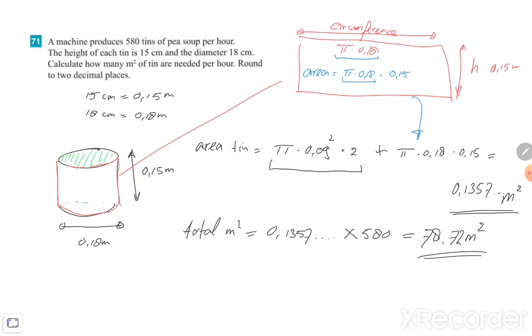So very important to calculate the area of one tin, and then you need to multiply with 580. You also can calculate, of course, with the square centimeters, but you need to convert it later to square meters. So that's your choice. Both ways are, of course, correct. So good luck with the rest of the exercises.